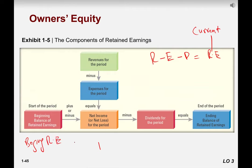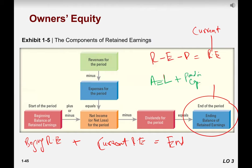So, beginning retained earnings plus current year retained earnings will be shown on this equation. Let me just change the color here. Assets equals liabilities plus paid in capital plus retained earnings. And we call this owner's equity, right? So this ending will be shown here.